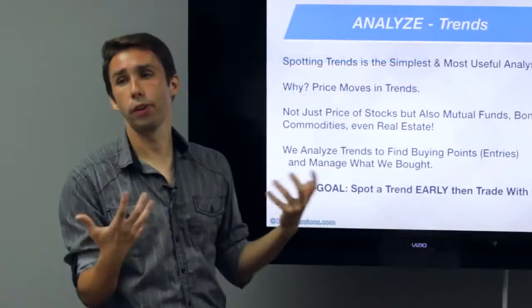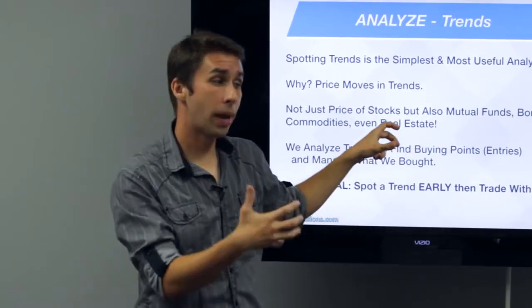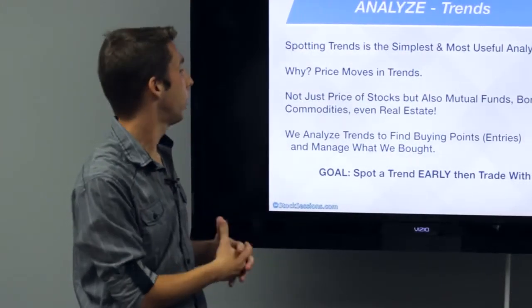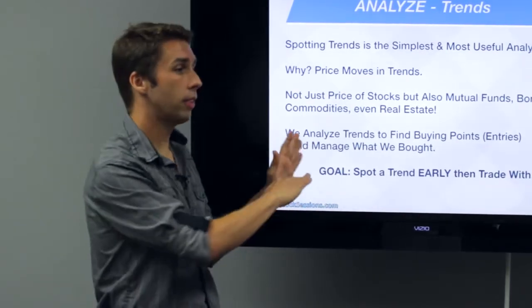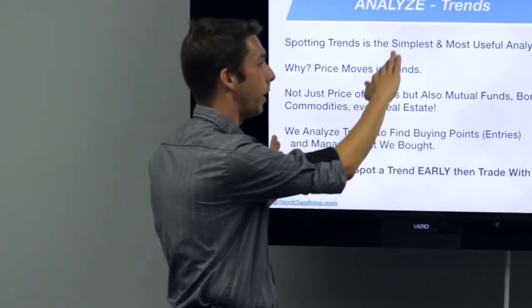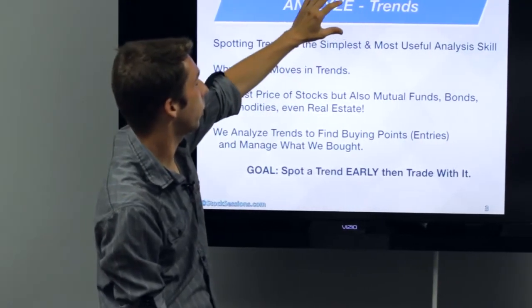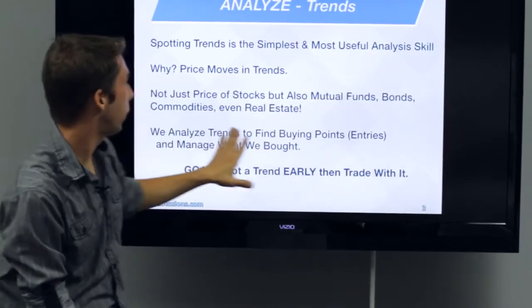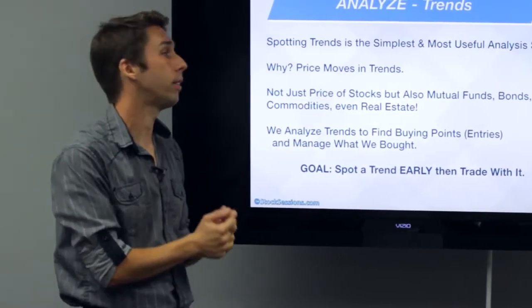Not just stocks, which is the focus of our stocksessions.com, but those mutual funds we talked about, which is paying someone to buy stocks for you. Bonds — it's the same thing as like a loan, we'll talk about that later. Commodities like oil or gold or silver, cotton for that matter. And even real estate. The price of a home in a neighborhood or a state or a region tends to trend up, up, up. It kind of stalls at the top, and then starts to trend lower. So even trends exist in the real estate market — ask any realtor and they'll tell you that.